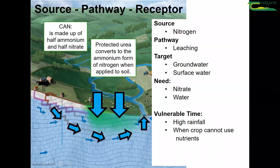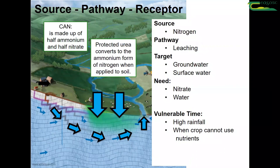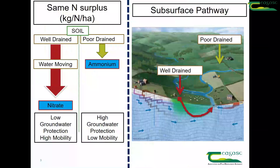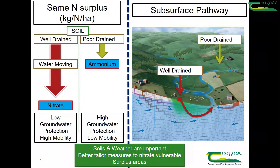Vulnerable times for nitrogen leaching are when you get high rainfall combined with a free-draining or moderately drained soil type. When the nitrogen isn't being used by the plant towards the end of the year and the start of the year in particular, you get high rainfall, the nitrate is sitting there, it washes through the soil and you get nitrate leaching. So soils, weather, and the source of nitrogen are all important.